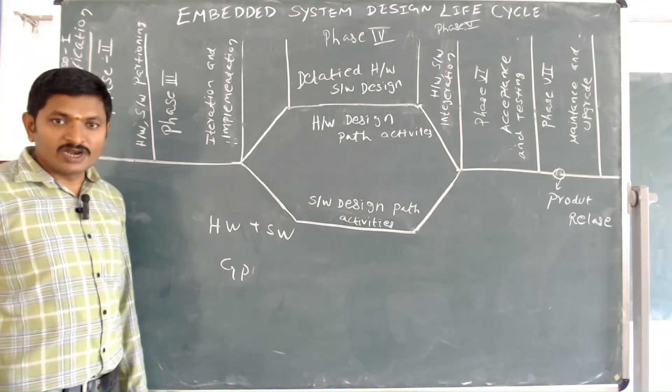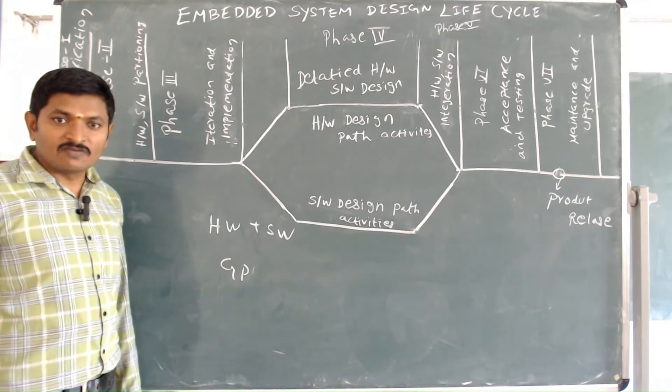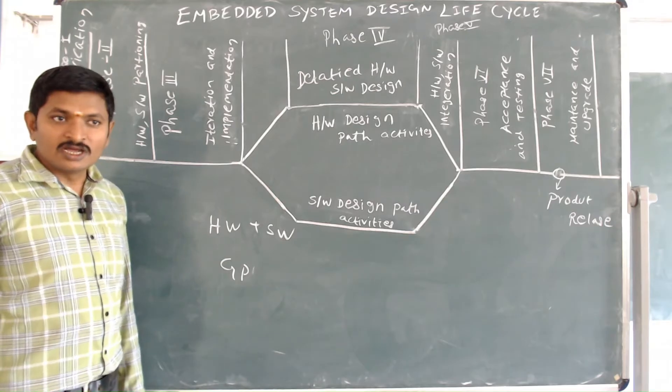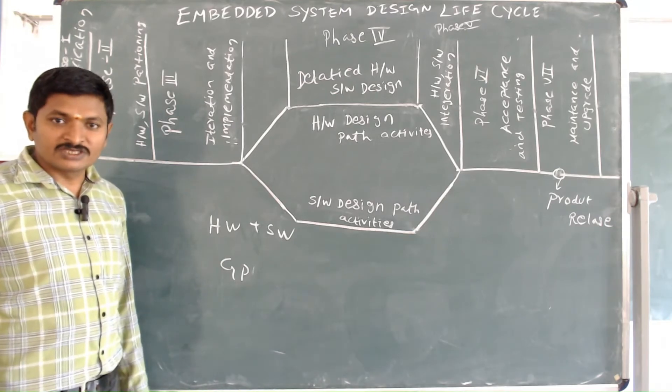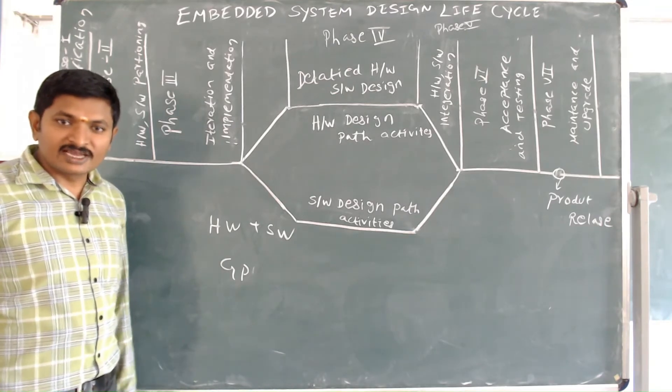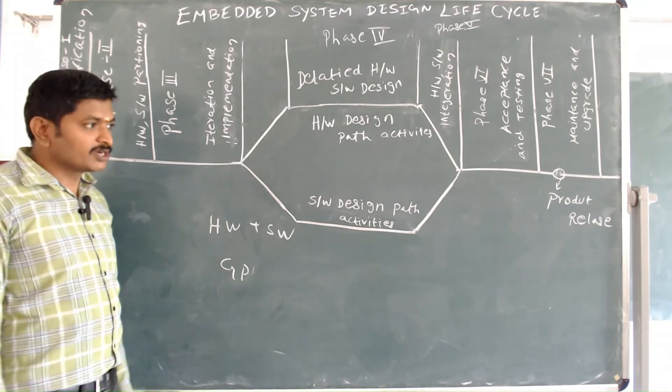For example, ATM machines, washing machines, microwave ovens, and mobile ports — these are the real-time examples of Embedded Systems.